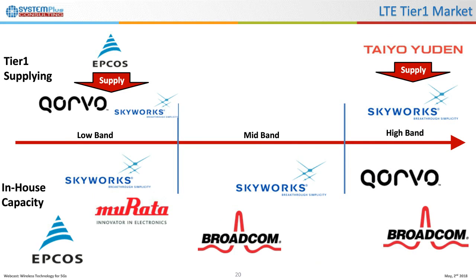Taiudan is integrated in the split even without its own front-end module — it is a third-party supplier to Skyworks. TDK Epcos also supplies Qorvo with SAW filters in the low-band frequency, allowing Qorvo to cover two frequency domains with both SAW and BAW filter technologies. With in-house capabilities, these three companies complete the landscape.